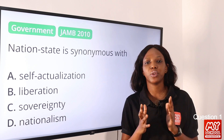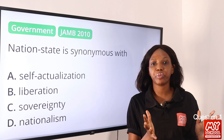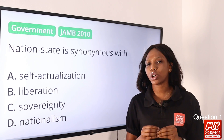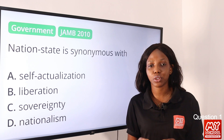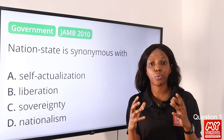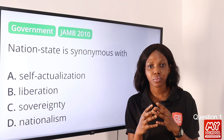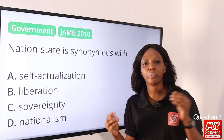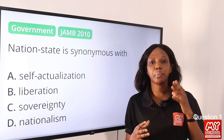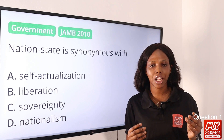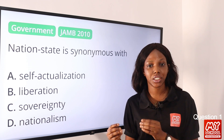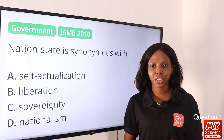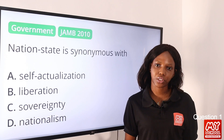When we talk about a state, we know that a state exists where there is a group of people, a territory, governance, and sovereignty. But when we talk about nation, we are talking about nationality — the feeling of oneness among a group of people. So nation state combines the two features; it is bounded not just by nationality but also by sovereignty. So option C is the final answer.